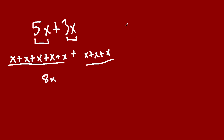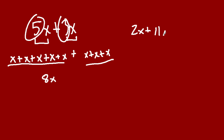And really what we're doing there is a shortcut. You can think of adding the coefficients, which are these numbers right here. The coefficients are the numbers you're multiplying your variables by. So for example, let's say we had 2x plus 11x. The coefficients are 11 and 2. We have 2 x's here and 11 x's there, so now we have a total of 13 x's.